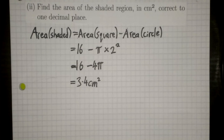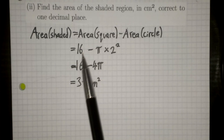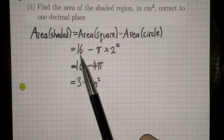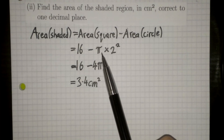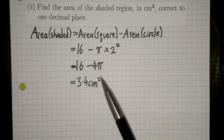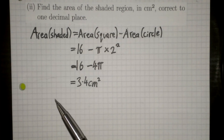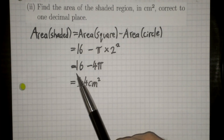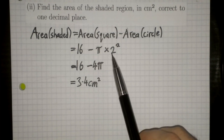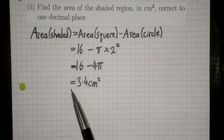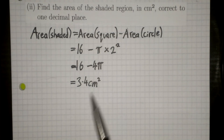The area of the square is 16, which we were told at the beginning. The area of the circle is given by πr², or half τr² if you prefer. Following through, you get 16 − 4π, because 2² = 4. Put that in the calculator and you get 3.4 cm².